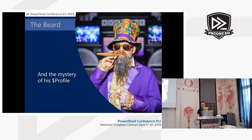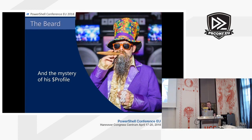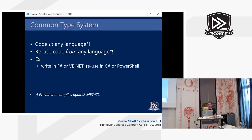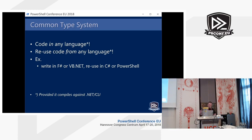The underlying type system — the one we get from .NET that isn't specific to PowerShell — had its design philosophy heavily borrowed from what Java was trying to do with the JVM when this was first invented almost 20 years ago. The idea is that you should be able to code in any language, define your functions and classes in any language that compiles against .NET, and then reuse that code from any other language that compiles against .NET.